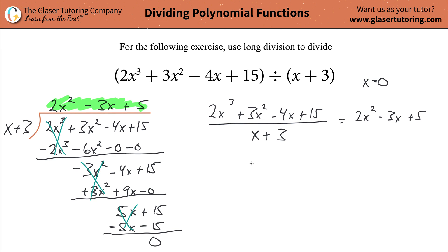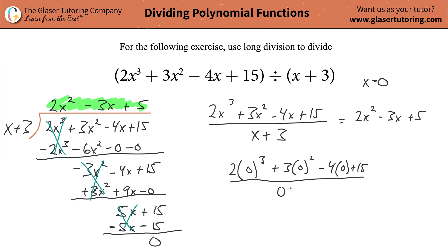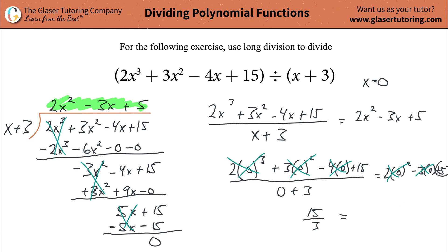I'm going to do zero. So: 2 times 0 cubed plus 3 times 0 squared minus 4 times 0 plus 15, all divided by 0 plus 3. That equals 2 times 0 squared minus 3 times 0 plus 5. All those zero terms cancel, so you're left with 15 over 3. And you're left with 5 on this side.